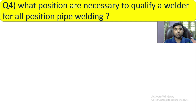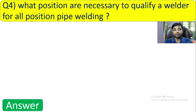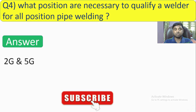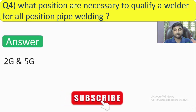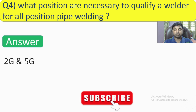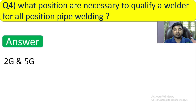Question number 4: What positions are necessary to qualify a welder for all-position pipe welding? If you qualify the welder in these positions, all positions will be qualified for that welder. The answer is 2G and 5G combined, or alternatively 6G. These are the two acceptable answers.